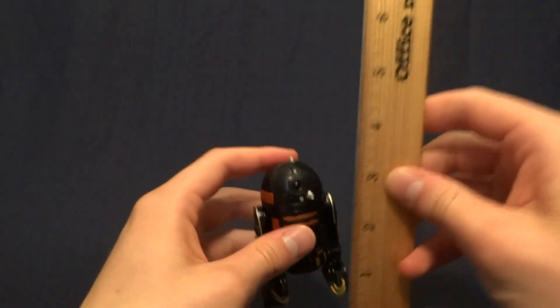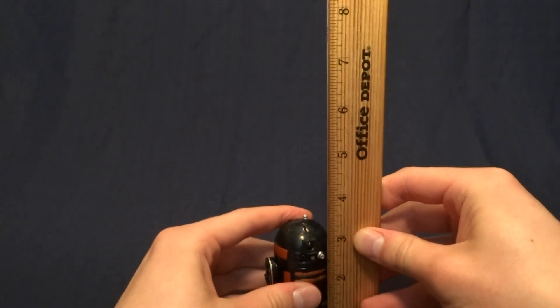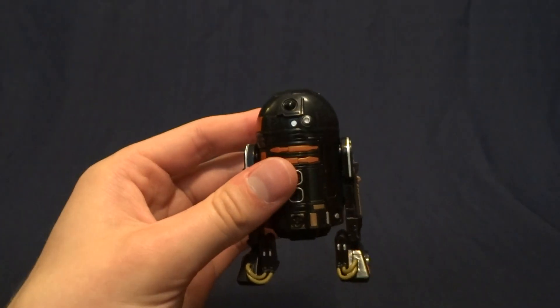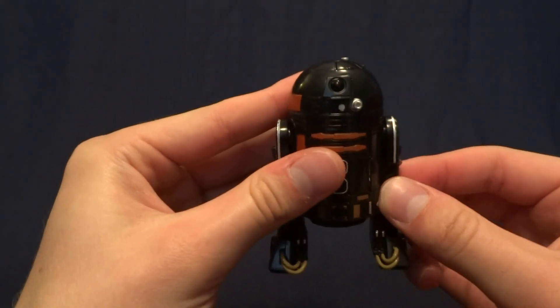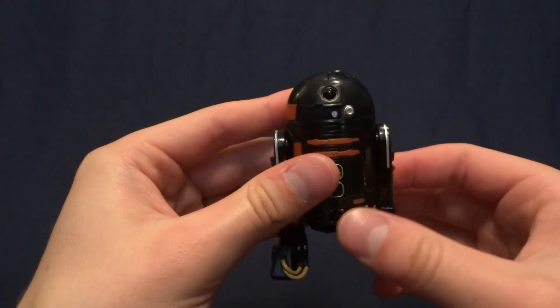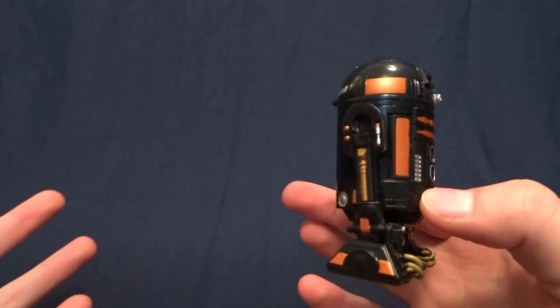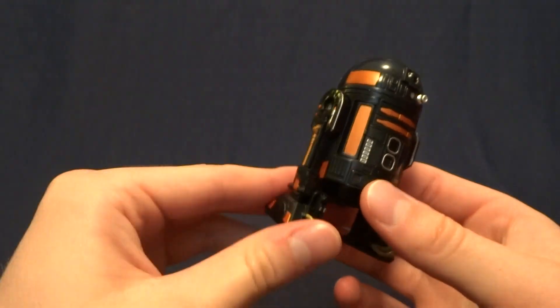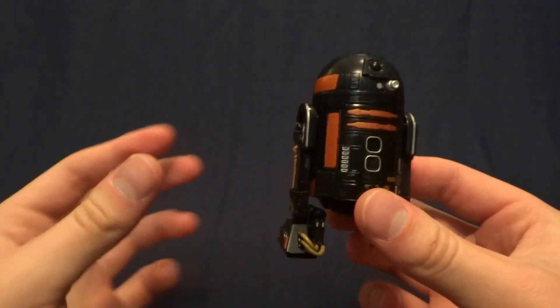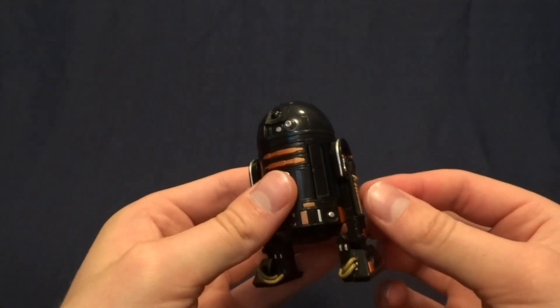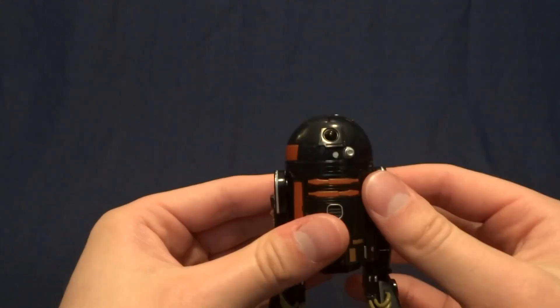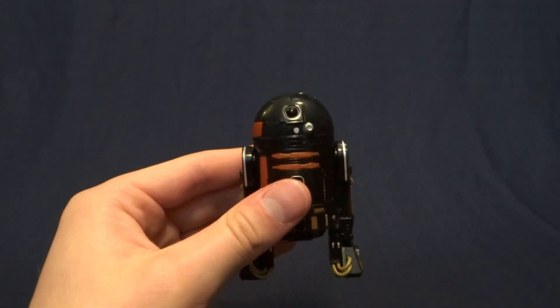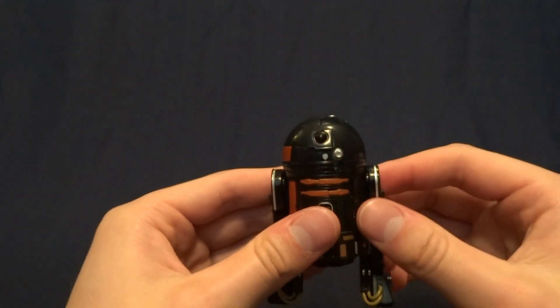R2-Q5 here stands at about 3 and 1/4 inches tall, which seems right with the other Black Series figures. And he doesn't come with any accessories. I guess there are some parts that you can remove, but he doesn't come with any actual removable accessory pieces that you can display him with. And that's kind of the first problem that I have with this figure.